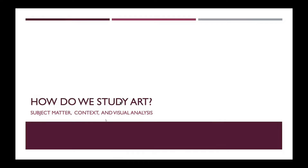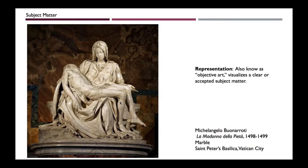So how do we study art? We study art by looking at subject matter, context, and visual analysis. First, with subject matter, we have several things we can talk about with images and artworks. Number one is representation, also known as objective art. Representation means that whatever this object is doing, it's visualizing a clear or accepted subject matter — something that you can recognize.